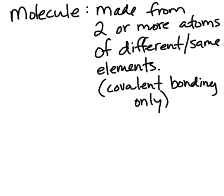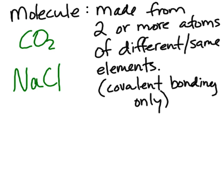A molecule is made from two or more atoms of the same or different elements. Carbon dioxide is a molecule because the carbon and oxygen atoms are covalently bonded — there are three atoms total from two different elements. Sodium chloride, on the other hand, is ionically bonded, which means it does not meet the definition of a molecule. So sodium chloride is a compound but not a molecule.